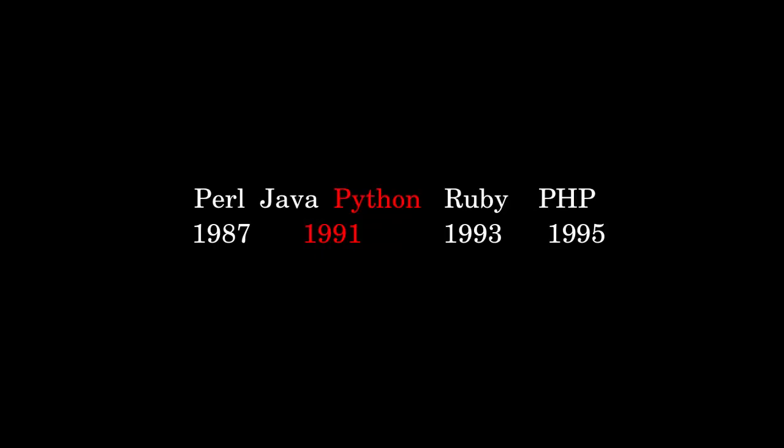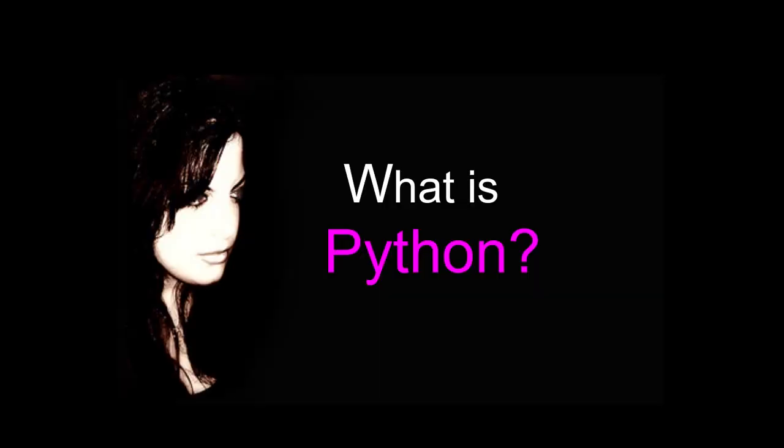Guido van Rossum created Python in 1991. Here are some other languages and the timings at which they came. Java and Python came at the same time — that is 1991. Now we will see a short definition about Python.